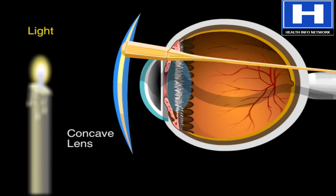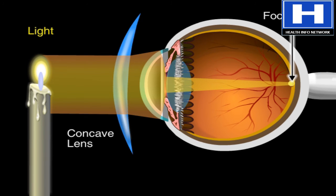Glasses with concave lenses can correct nearsightedness. The lens widens the plane of light coming through the cornea. That pushes the focal point back onto the retina.